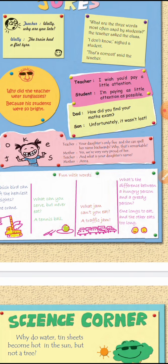Next one — the teacher is saying: 'I wish you would pay a little attention.' The teacher worries that if students paid a little attention, they could do their work well. And the student answered: 'I am paying as little attention as possible' — meaning the student is already paying as little attention as they can, yet they still couldn't score marks.